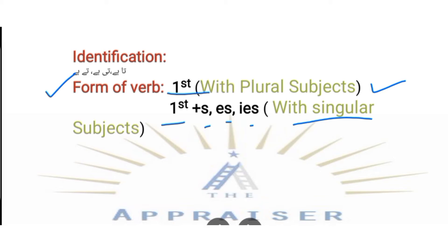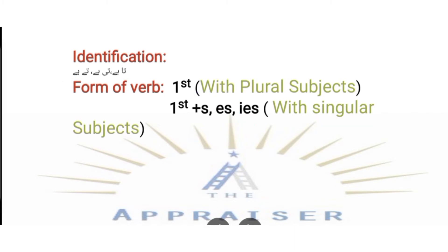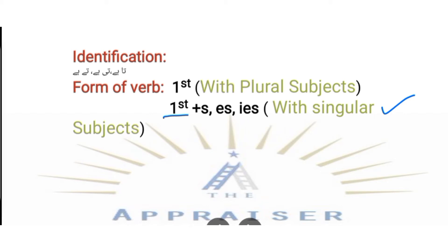For example, if I say 'he goes to school,' then he is a singular subject, so we add S to the verb 'go.' But if I say 'they go to school,' then I will not add S to go. For plural subjects like I, we, they, you — we just put the first form of verb: go, walk, teach, talk. But for singular subjects like he, she, it — we add S, ES, or IES to the first form.